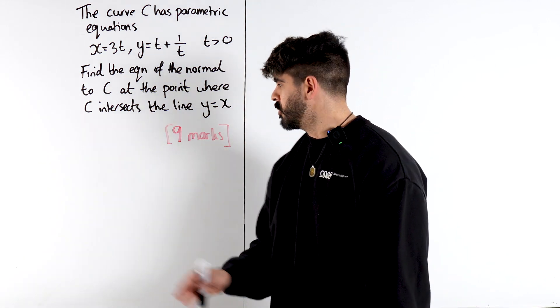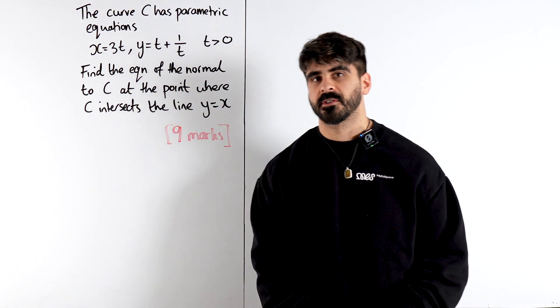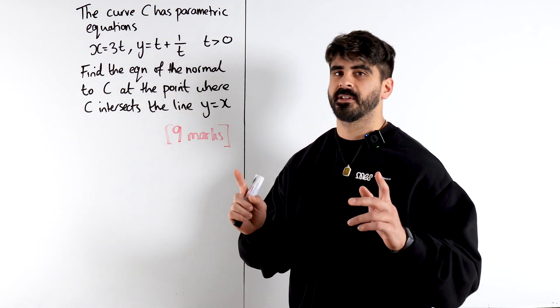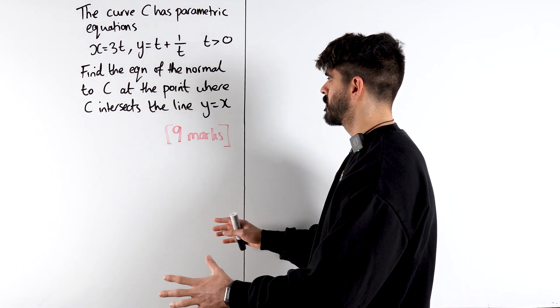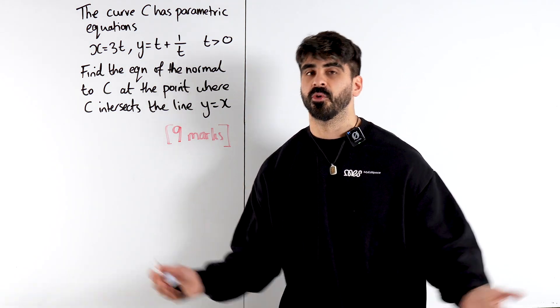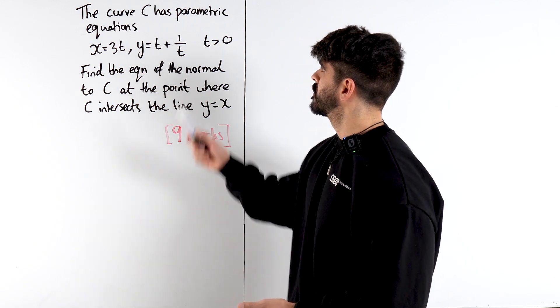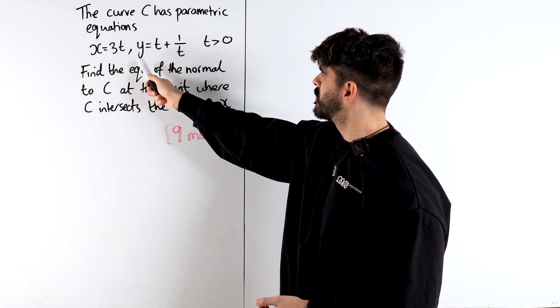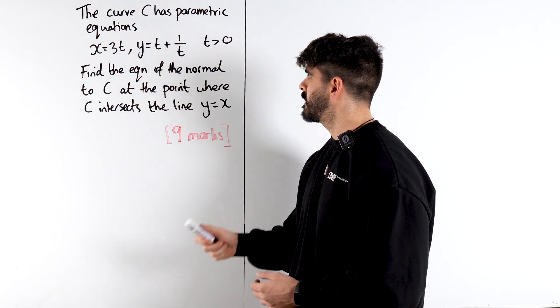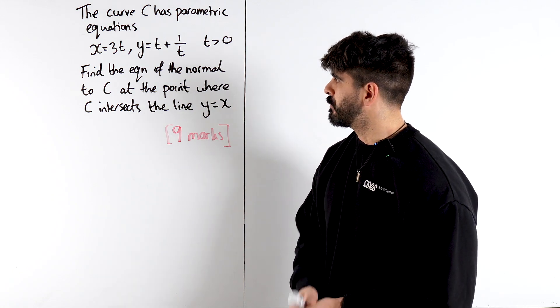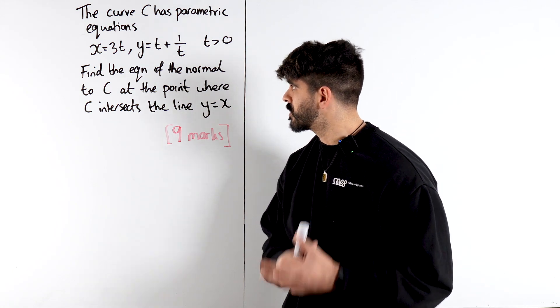Parametric equations. Usually these are worth a lot of marks. Don't be intimidated though, because if you follow simple steps they're very easy to secure all the nine marks. So it says the curve C has these parametric equations for T being positive. Find the equation of the normal to C at the point where C intersects the line Y equals X.